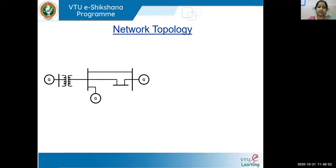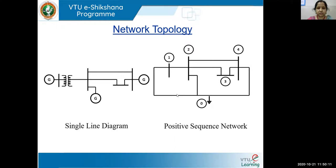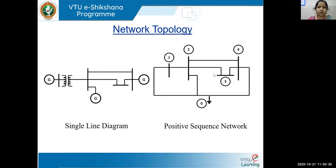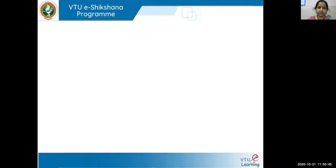Here we'll take a network — a single line diagram — where you can see there are number of generators, buses, transmission lines, transformers, etc. I hope all of you have learned how to convert a single line diagram into a positive sequence network. This is your positive sequence network, where you can see the generators are usually grounded, giving you the reference point zero. Now this particular positive sequence network I will be converting into a graph, where all the points — one, two, three, four, and zero — will be expressed as nodes, and all the transmission lines or connections between buses will be considered as elements.